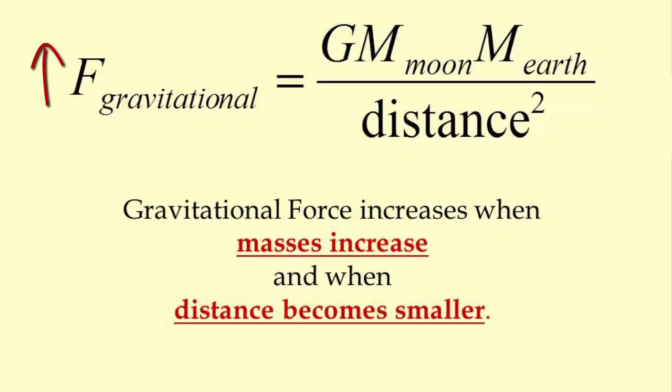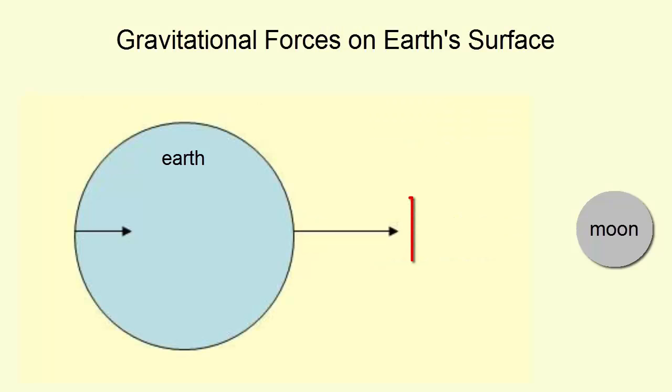How would you make this gravitational force or fraction greater? Increase the numerator or decrease the denominator? Increase the mass of the objects, or decrease the distance between the two objects. The force of gravity on the closer side to the Moon thus feels a stronger gravitational force than the other.